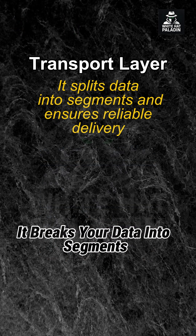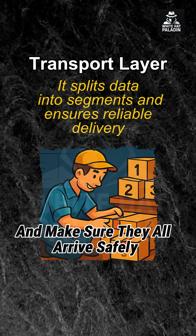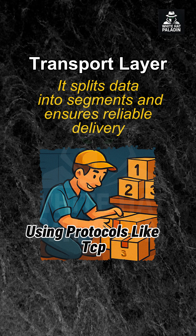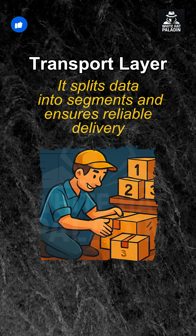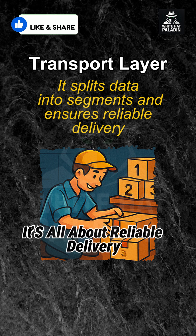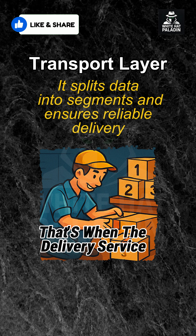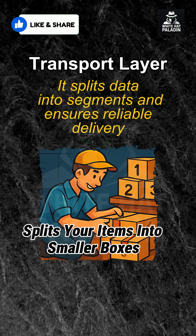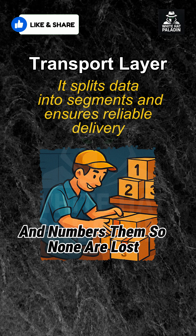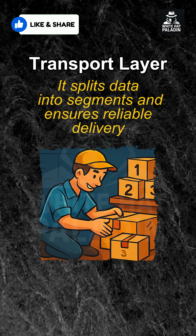Next is the transport layer. It breaks your data into segments and makes sure they all arrive safely, using protocols like TCP. It's all about reliable delivery — that's when the delivery service splits your items into smaller boxes and numbers them so none are lost.